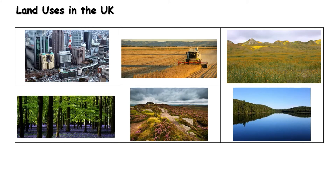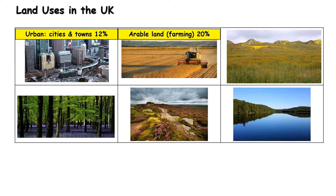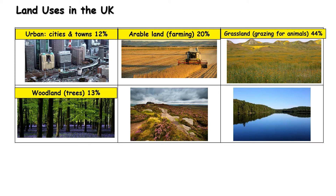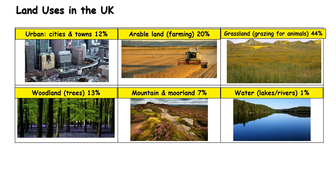Let's look at land uses in the UK — what is the main thing done on the land. 12% of the UK is covered in urban areas — cities and towns — but the actual area built on is only 6%, the other 6% being gardens, parks and open areas within cities. Amazingly, only 6% of the UK is built upon. 20% is farming land, with arable meaning crop farming. 44% is grassland for grazing animals such as cows and sheep. 13% is covered in trees or woodland, 7% is mountain and moorland, and 1% is lakes and rivers.